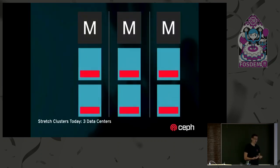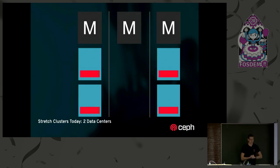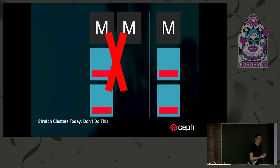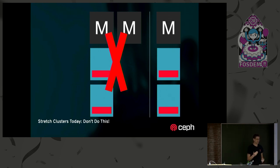People can deploy stretch clusters today with three data centers, or with two data centers and a third off-site tiebreaker monitor in the cloud. The reason you want three is because if two monitors are in one data center and that data center goes down, you can't make progress. The monitors are a Paxos consensus-based system — making a change requires more than half the monitors to agree. With three monitors you need two; with five you need three. If you lose a whole data center, the surviving monitor can't act alone and requires manual administrator intervention.